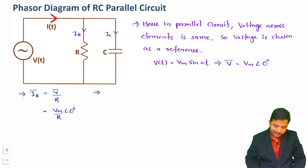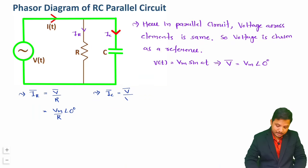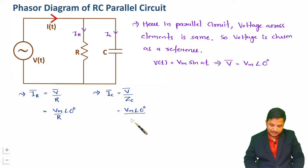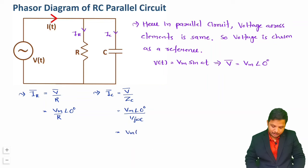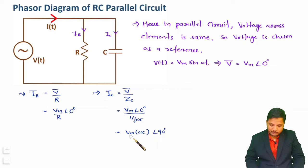IC in phasor form equals voltage in phasor form divided by the impedance of capacitance ZC. ZC is 1/(jωC), so IC = Vm∠0° divided by 1/(jωC). Since jωC moves to the numerator, we get IC = Vm·ωC with angle 90°, because j carries an angle of 90°. So the capacitor current phasor has magnitude Vm·ωC and phase 90°.